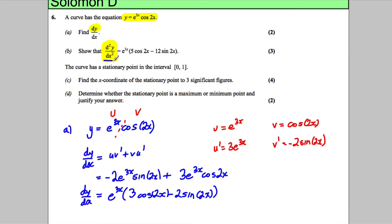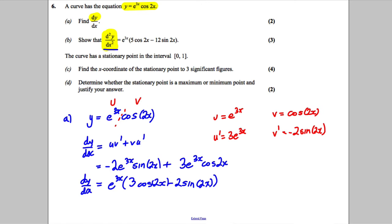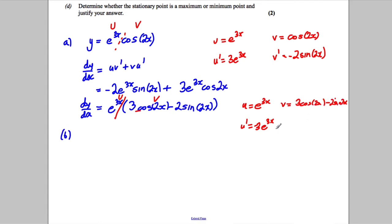Now for part B we differentiate again to find d²y/dx². You should notice you have a product again, where u is e to the 3x as before, so u' is 3e to the 3x. Your v in this case is slightly more complicated — it's 3 cos 2x minus 2 sine 2x. Differentiating v: the derivative of 3 cos 2x gives negative 6 sine 2x, and the derivative of negative 2 sine 2x gives negative 4 cos 2x.